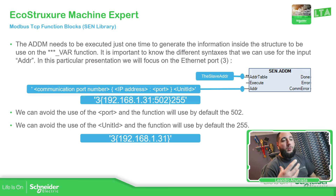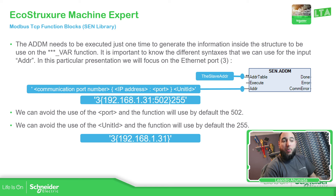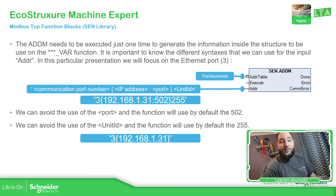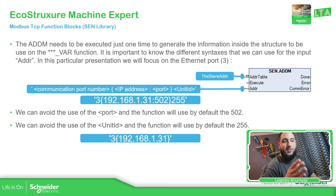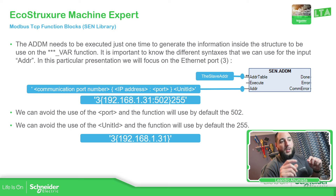Depending on how we are going to communicate to the device, the syntax that we need to use is different. In this particular case, as we are using the Ethernet port, we just need to use communication port number three. If you're going to use Modbus Serial, we just need to use the number one. For Modbus TCP, we just need to use number three, and between the curly brackets, we just need to use the IP address.